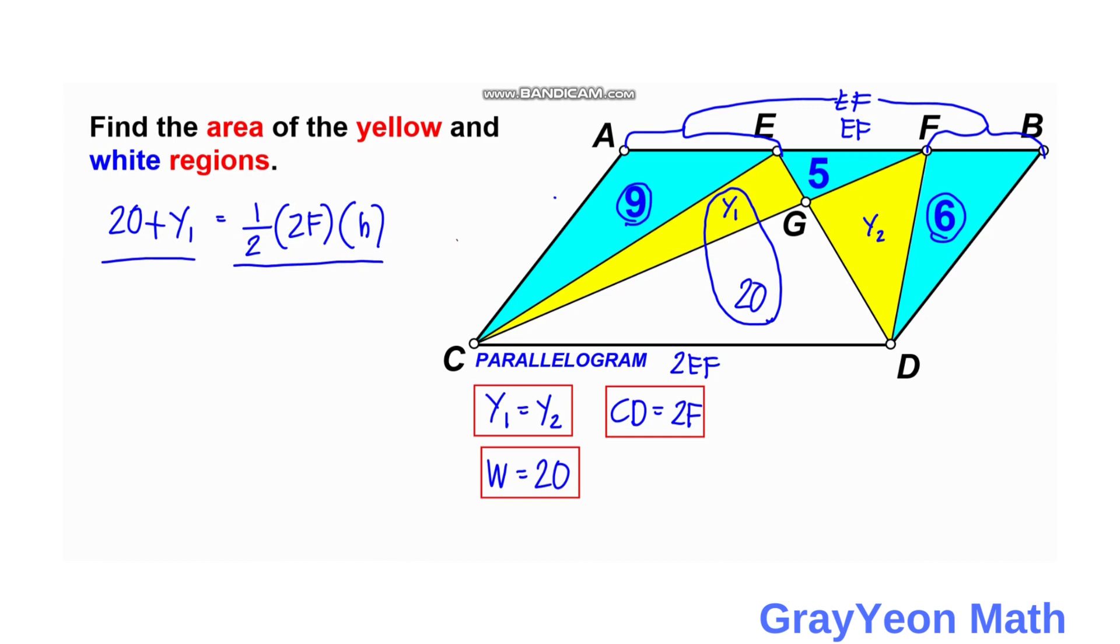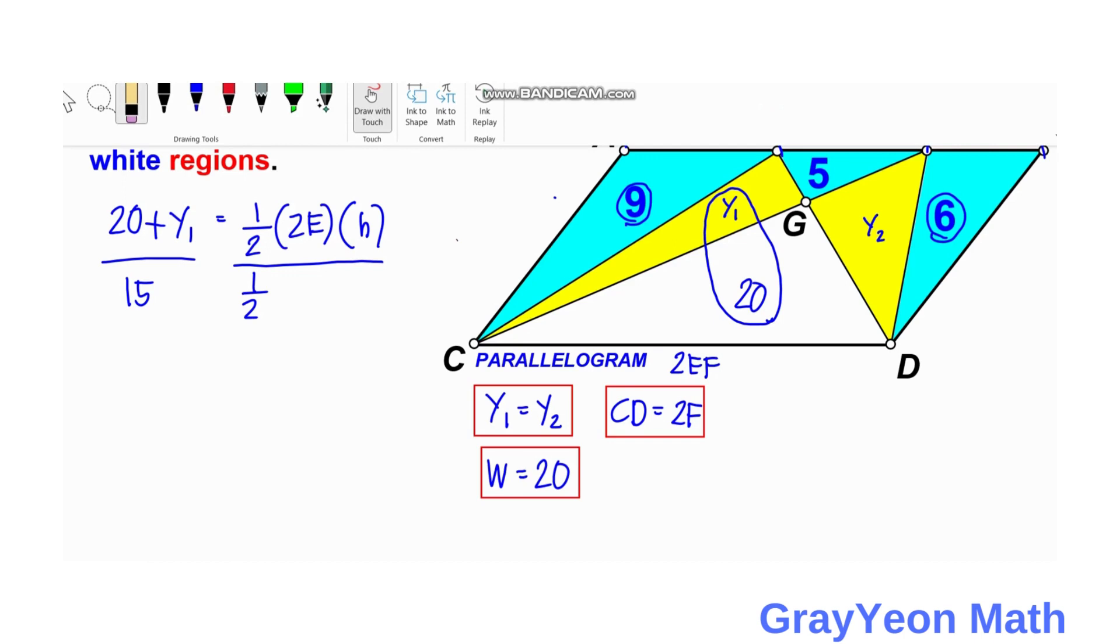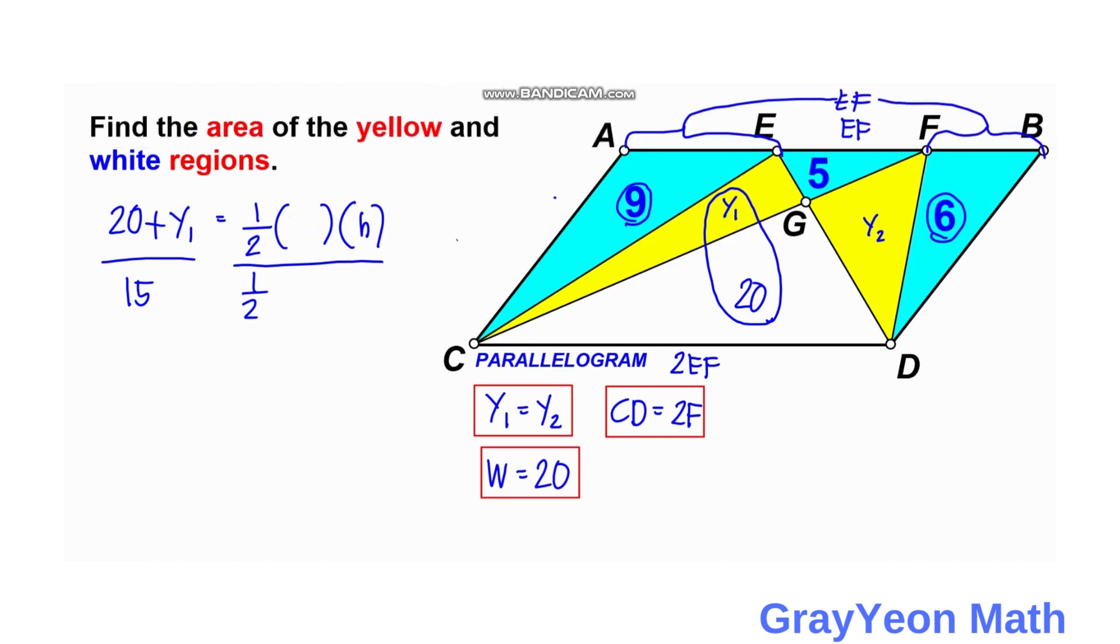We compare this with the other triangle, so the other triangle is 9 plus 6, so that would be 15. One half times the base, which is EF, and the base for the 15, the base is actually EF, and the height is H, which is also the height of the parallelogram, the height that is common.